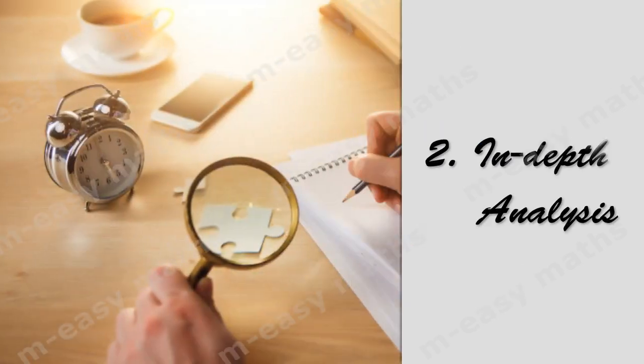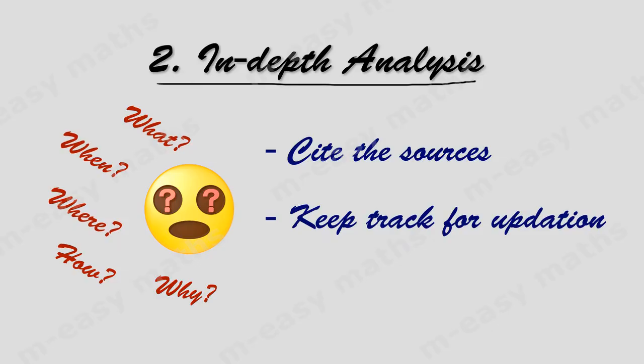Step 2 is in-depth analysis. Analysis is a thorough study. Go for an in-depth analysis of the topic you have identified. When citing resources regarding this topic, all the WH questions — what, when, where, why, and how — have to be answered. You should keep track of all the resources then and there so that you will be updated whenever there is an update.